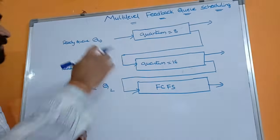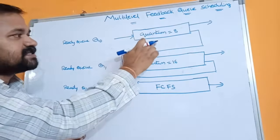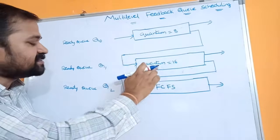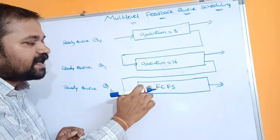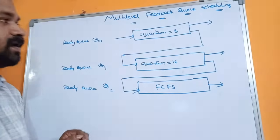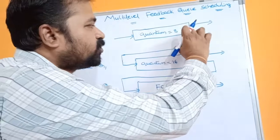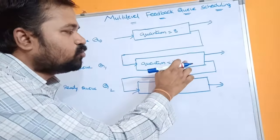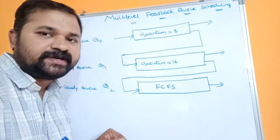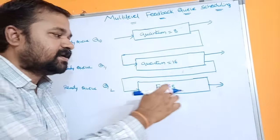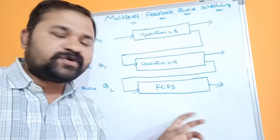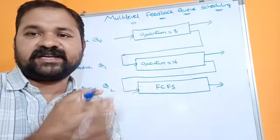Let's see this diagram. Here we have three ready queues: Q0, Q1, and Q2. The processes in Q0 and Q1 are executed with the help of Round Robin scheduling algorithm, whereas the processes in Q2 are executed with the help of FCFS algorithm.